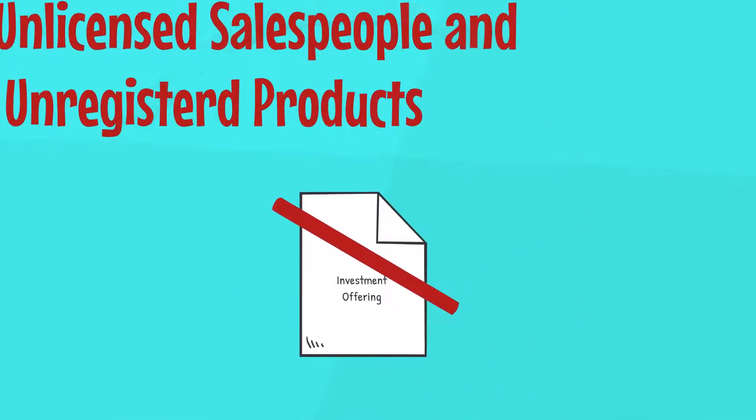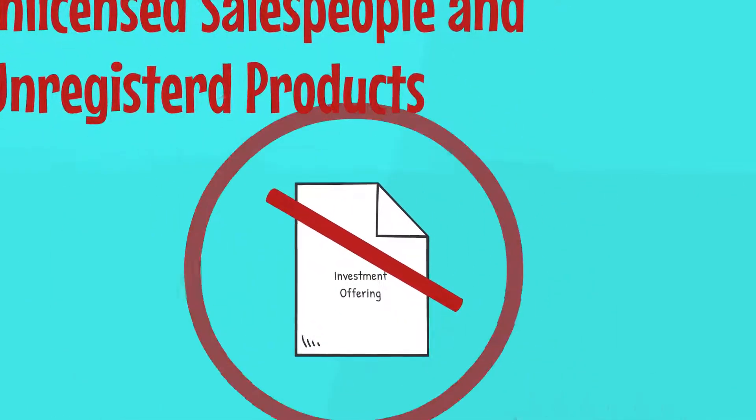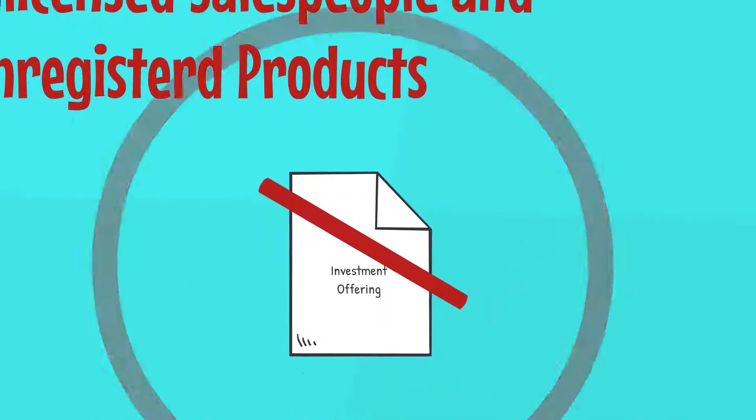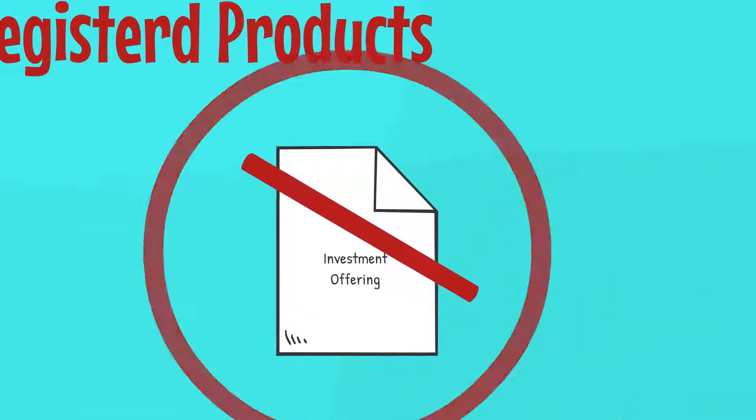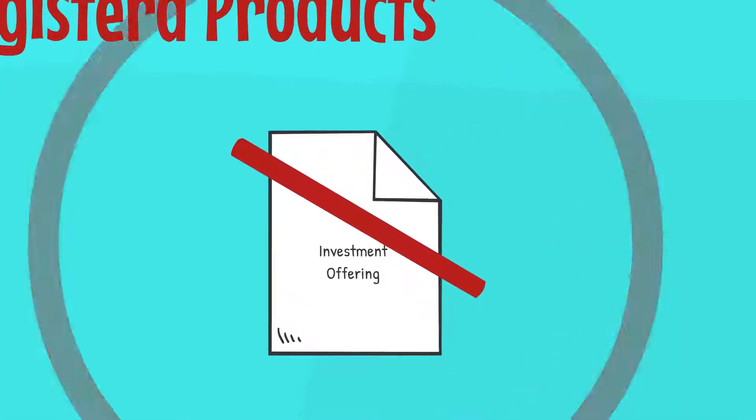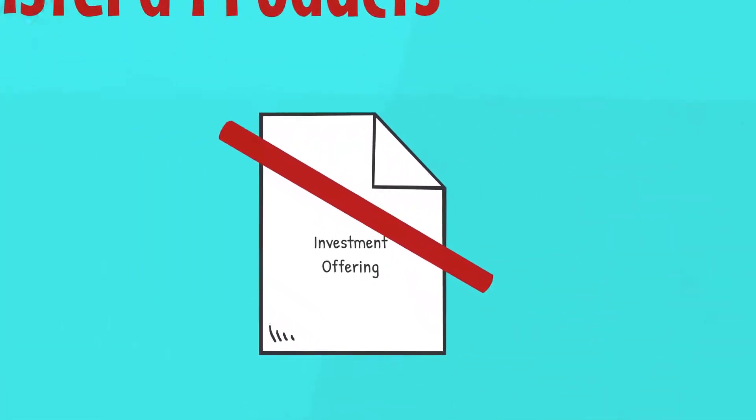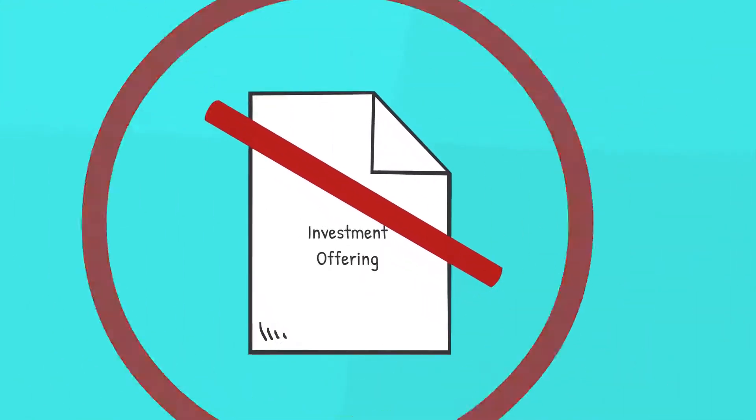Many investment scams involve unlicensed individuals selling unregistered investment products. Your local securities regulator can help determine if the product has been registered for sale and if the person is licensed or registered to sell securities in your jurisdiction.